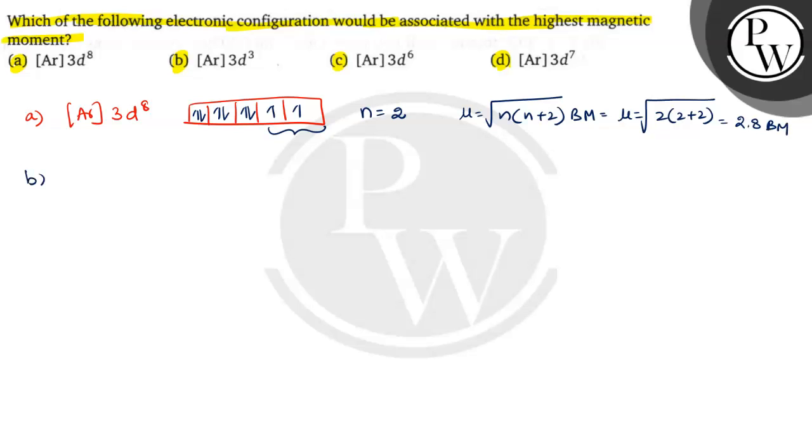In case of B option argon 3d3, 3d3 means d orbitals having 3 unpaired electrons. So n value is equal to 3. If n value is 3, the mu value is equal to root over 3 into 3 plus 2, root 15, which is 3.8 Bohr magnetons.